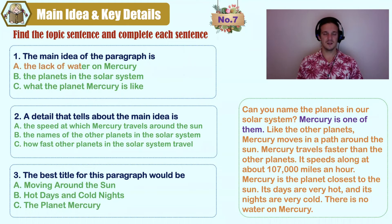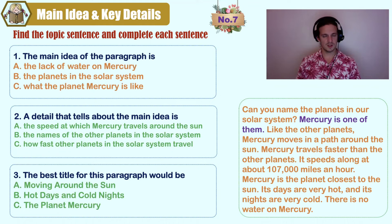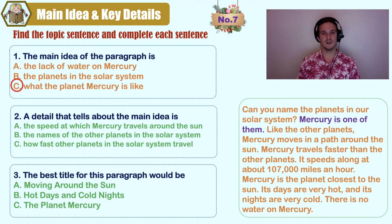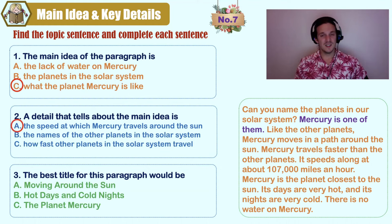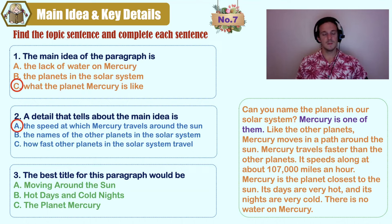What's the main idea? A) the lack of water on Mercury, B) the planets in the solar system, C) what the planet Mercury is like. The paragraph begins by talking about the solar system, but every sentence afterward is about what the planet Mercury is like — it doesn't talk about any other planets. Which detail can you find? A) the speed at which Mercury travels around the sun, B) the names of the other planets, C) how fast other planets travel. Careful! A detail about the main idea is A — the speed at which Mercury travels around the sun. B and C aren't in the paragraph.